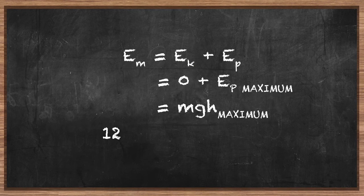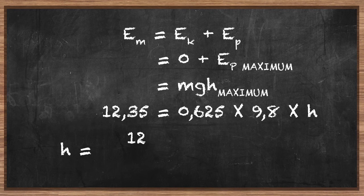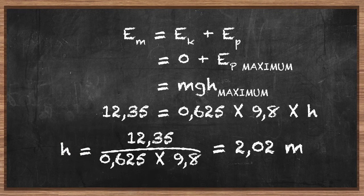So: 12.35 = 0.625 × 9.8 × h. Rearranging to solve for h, we get a maximum height of 2.02 meters above the player's hand.